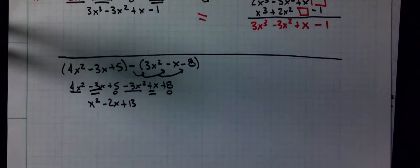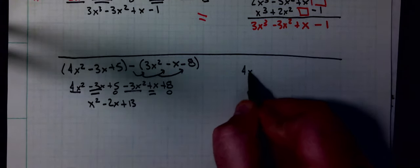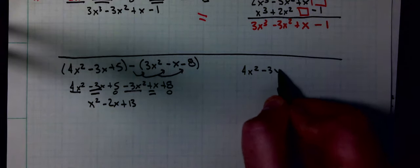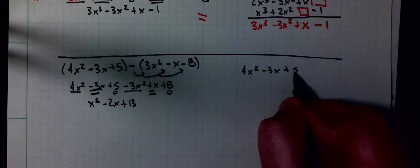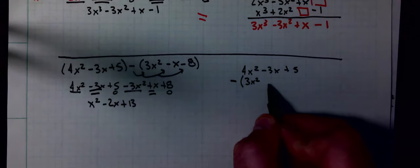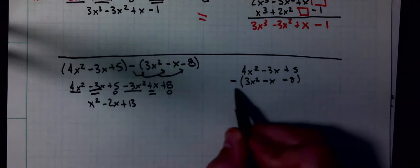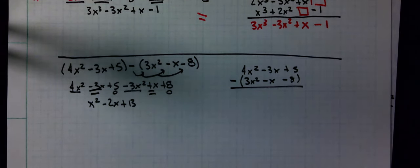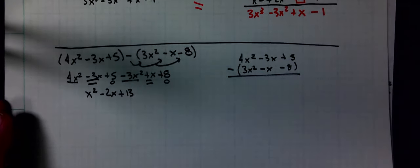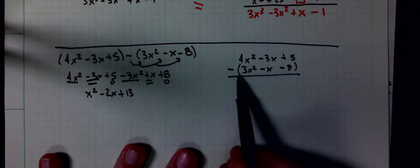Now to do this one vertically, I'm going to write the first one. 4x² minus 3x plus 5. Minus with parentheses. 3x² minus x minus 8. I'm going to do the subtraction two different ways vertically. Let you choose your way. One is this way where you put parentheses.